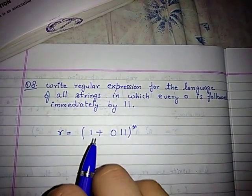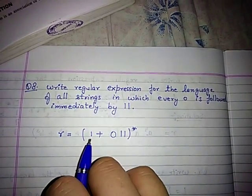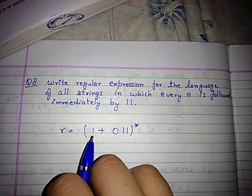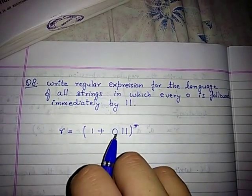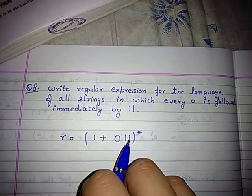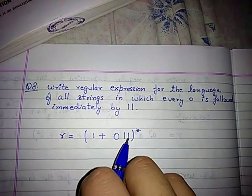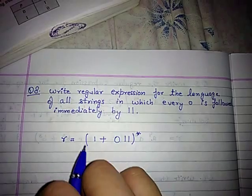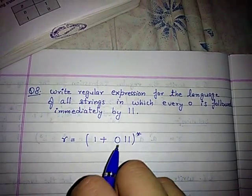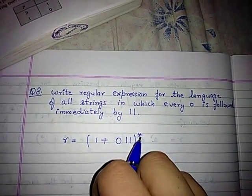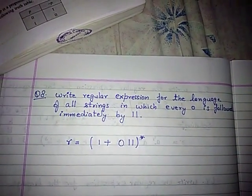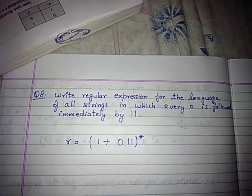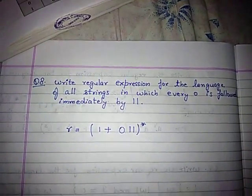Here, there is a possibility that there will be only ones, or zero will be followed by double one. This pattern will be enclosed in a Kleene star, allowing the sequence to be repeated any number of times.